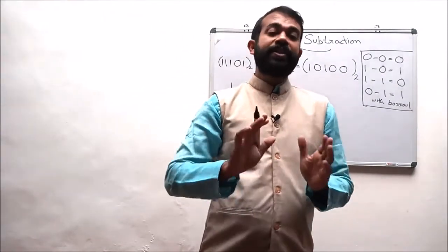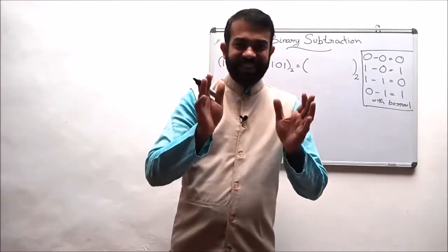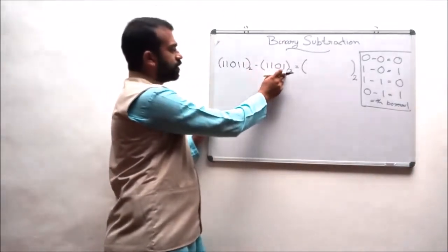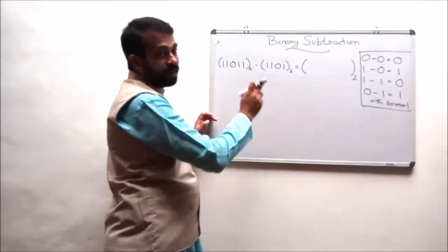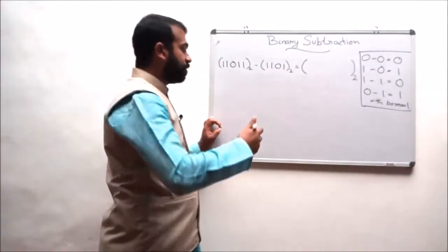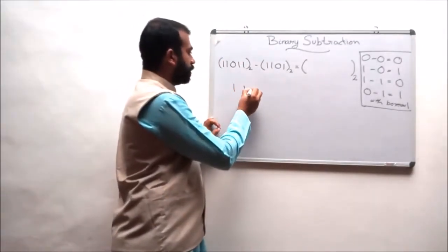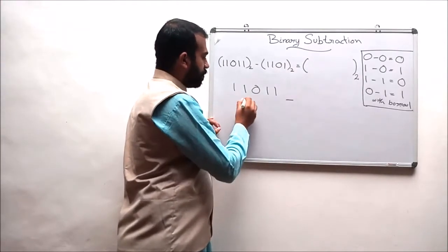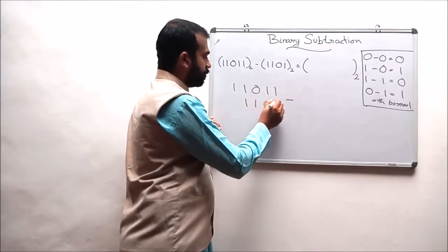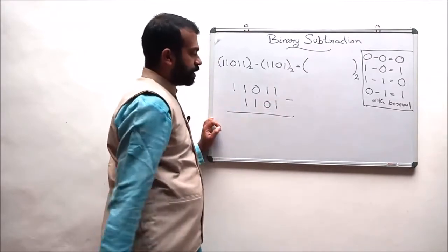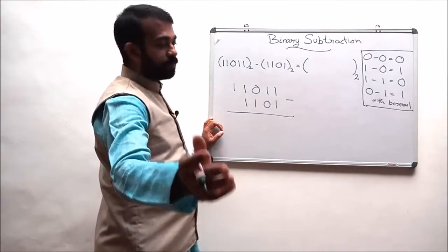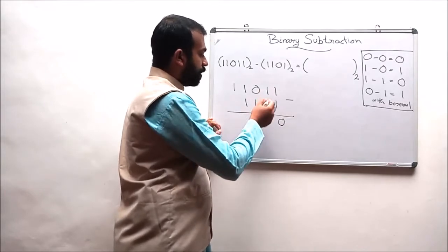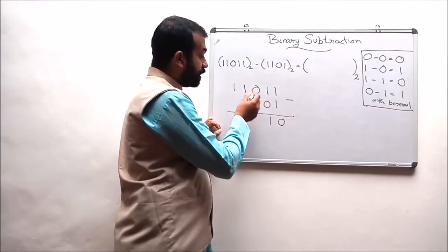This is how we perform the subtraction operation. Let us consider one more example. The second example is subtracting 1-1-0-1 from 1-1-0-1-1. We write the greater number first: 1-1-0-1-1, and the second number is 1-1-0-1. Starting from the LSB position: 1 minus 1 results in 0, and 1 minus 0 results in 1.